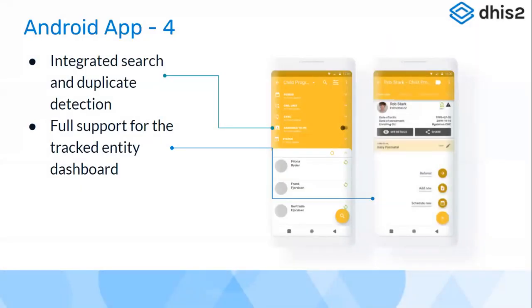One of the most important features is avoiding duplicate beneficiary registrations. The search and new patient registration is part of an integrated search mechanism — before adding a new patient, you enter the person's information and the app runs a search against existing records. If a match is found, the app shows the result and warns that a person with the same information already exists. If you confirm it's a different person, you can register them and all attributes filled during the search are automatically carried forward to the registration form.